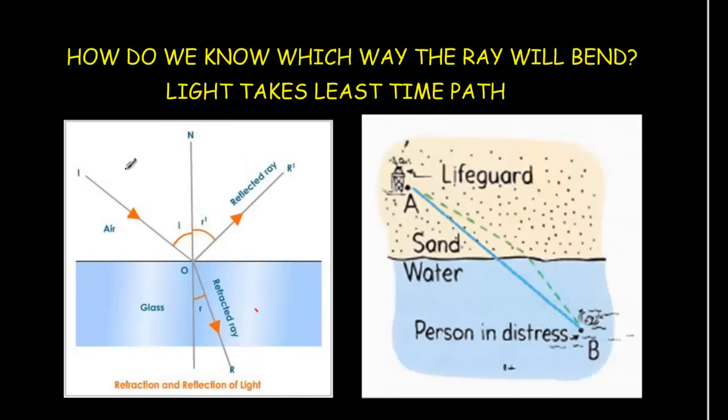We were just saying how when light travels from a fast medium, say air, into a slow medium, say glass, that the incident ray, it does not continue on its straight line path. It bends towards the normal.